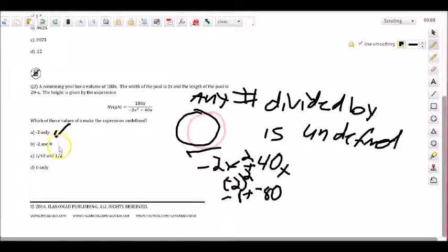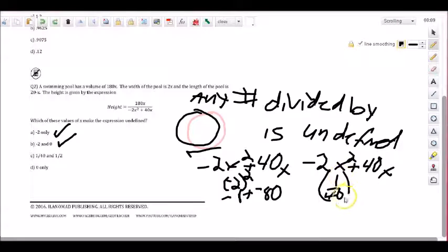Well we already know it's not negative 2 so we know it can't be negative 2 and 0 because we already eliminated negative 2. And then there's a fraction 1/40 and 1/2. So if we came over here and once again did minus 2x squared plus 40x.